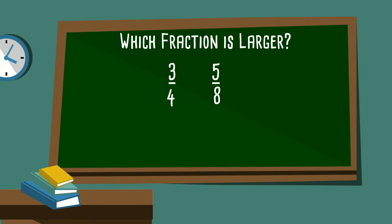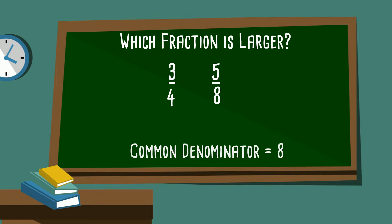Let's take a look at this first example. We have three-fourths and five-eighths — which is larger? It's hard to tell, but let's rename the fractions so that we can easily compare them. We'll do this by finding a common denominator.